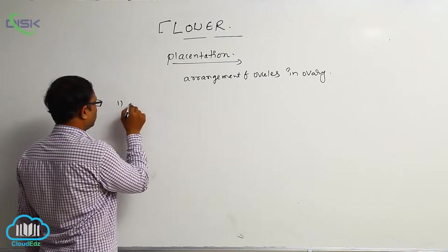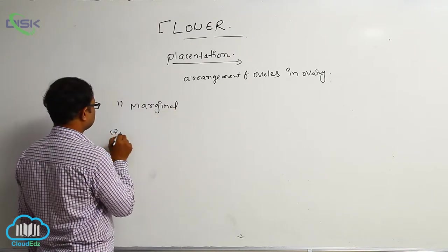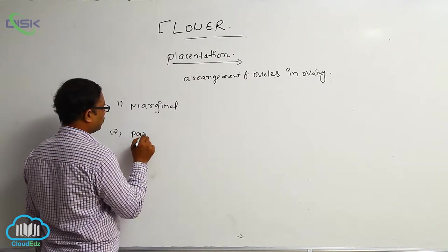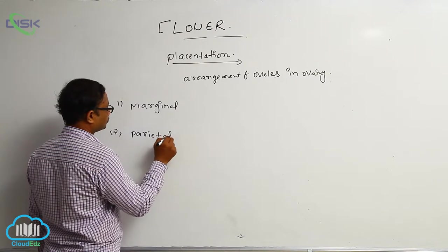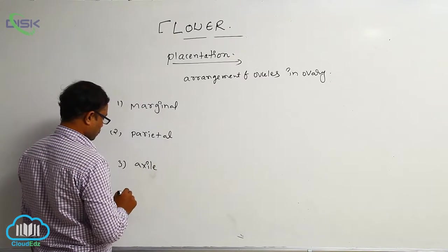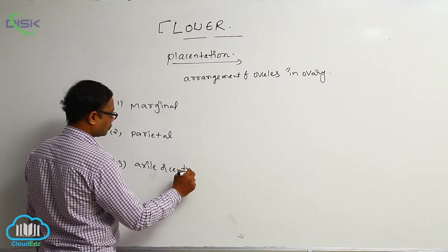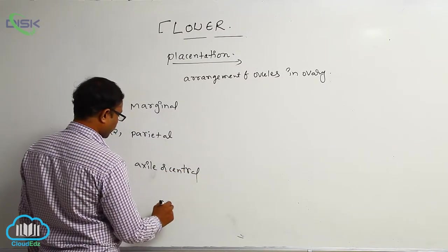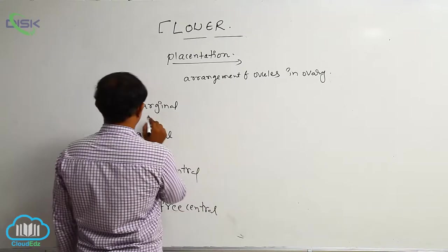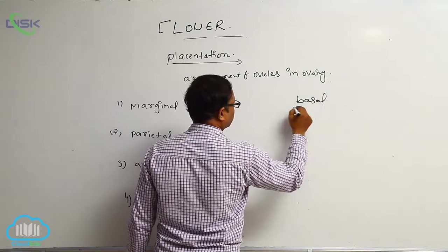The types of placentation are: Marginal Placentation, Parietal Placentation, Axial or Central Placentation, Free Central Placentation, and Basal Placentation. These are important objective questions from previous bits, including 2017.